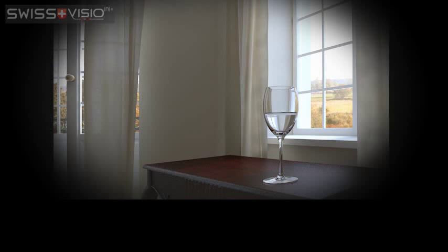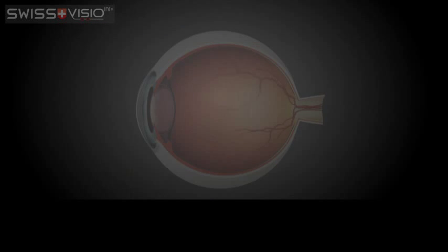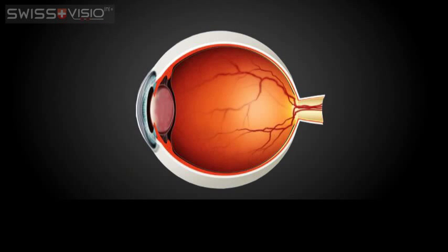Abbe value refers to the clarity of transparent materials. Theoretically, perfect transparency is 100 on the Abbe scale, but because light travels through both the cornea and the crystalline lens, the Abbe value of the eye is between 45 and 50.